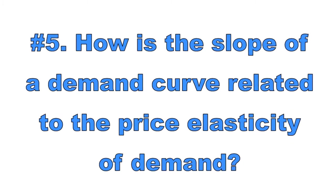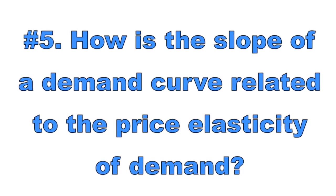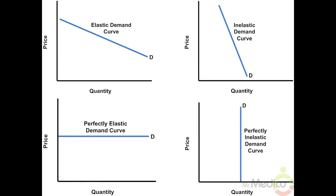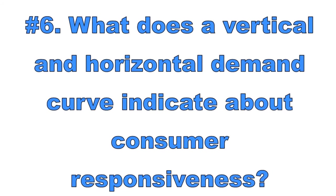Number five: how is the slope of a demand curve related to the price elasticity of demand? The slope of a good's demand curve is not the same as the price elasticity of demand. For example, slope can be constant while elasticity changes along the demand curve. At low prices, demand can be relatively price inelastic, and at high prices demand can be relatively price elastic. However, if a good has a steep demand curve, its demand is more inelastic than a good with a flat demand curve. If a good has a flatter demand curve, its demand is relatively price elastic.